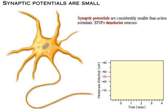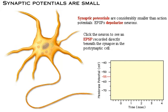Synaptic potentials are considerably smaller than action potentials. Excitatory post-synaptic potentials depolarize neurons. Click the neuron to see an EPSP recorded directly beneath the synapse in the post-synaptic cell.